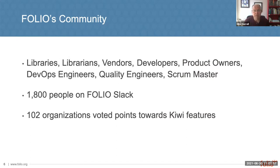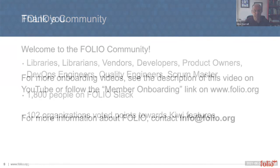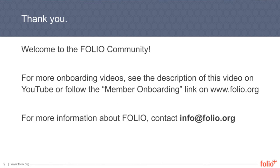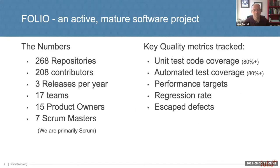The community itself is made up of many different types of people and organizations — it's a very diverse community. We have 1,800 people on the Folio Slack, and 108 organizations represented. We name our releases according to the alphabet, and we're talking about the Kiwi release later this year. In terms of the software product, it's still growing, but the software project is very mature. On GitHub, we have 268 repositories and over 200 contributors. We're now at a cadence of three releases per year.